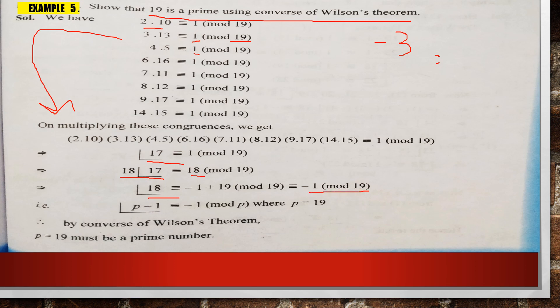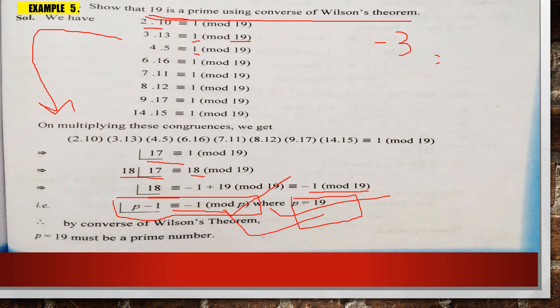Here p = 19 and this matches the form (p-1)! ≡ -1 (mod p), which is exactly Wilson's theorem. By the converse of Wilson's theorem, since we have proved (p-1)! ≡ -1 (mod p), we can conclude that p = 19 is a prime number. In this video we have learned various examples related to Wilson's theorem. If you like my video, please subscribe to my channel. Thank you very much.